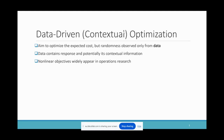In data-driven stochastic optimization, a decision maker aims to optimize a cost function that involves some random outcomes, where the randomness can only be observed from data. Moreover, in data-driven contextual optimization, data consists of responses and their associated contextual information. In this work, we particularly look at data-driven optimization with nonlinear objectives, which appear widely in many real-world applications.